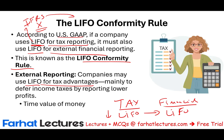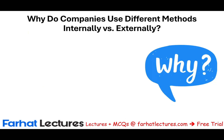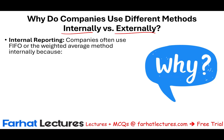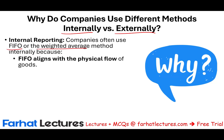Although a company uses LIFO externally, internally they may use a different method. Whatever is reported externally doesn't have to match internal processes. A company could use LIFO for external purposes and FIFO or another method internally. Most companies use FIFO internally because the physical flow of goods is FIFO — retailers and grocery stores want to sell the first item in first. FIFO also aligns with the physical flow of goods and is easier for record keeping.